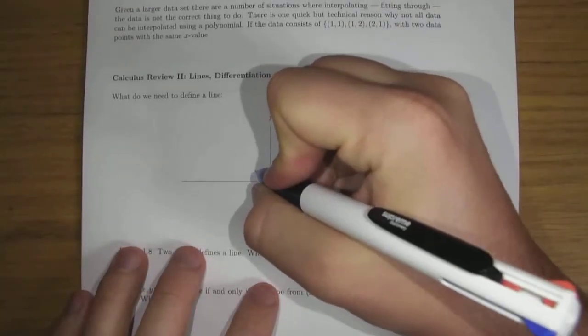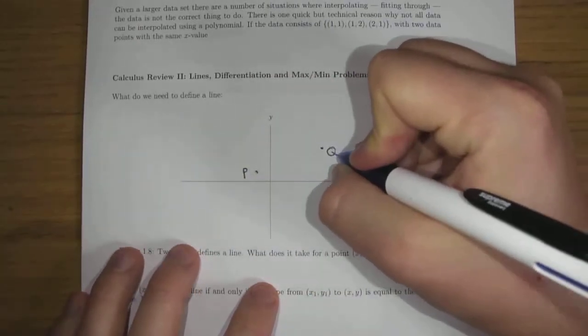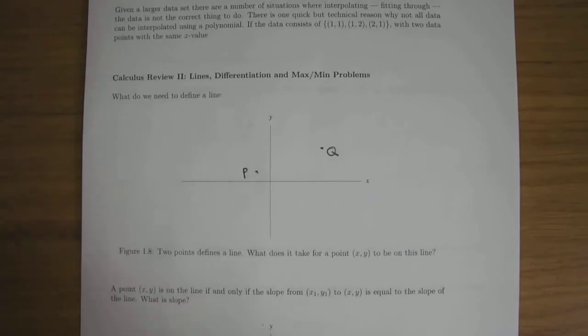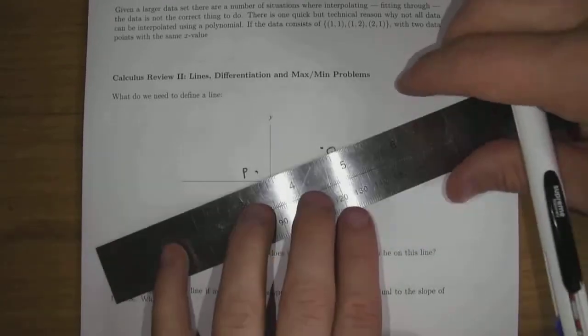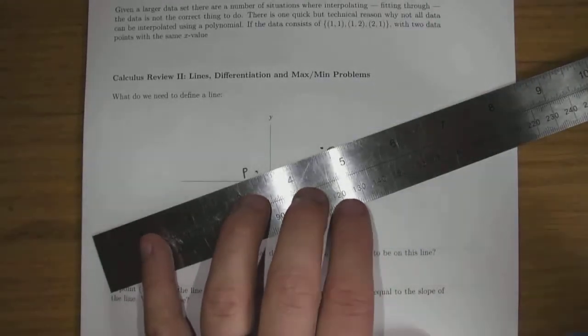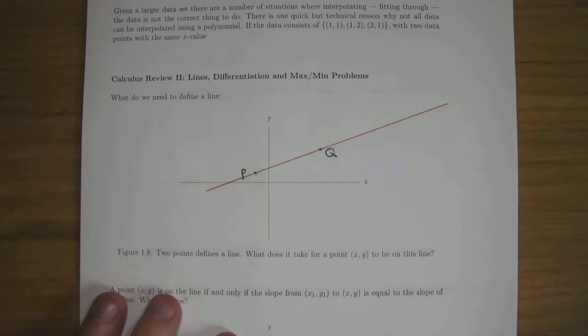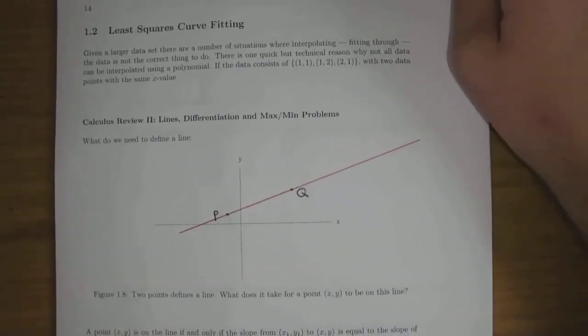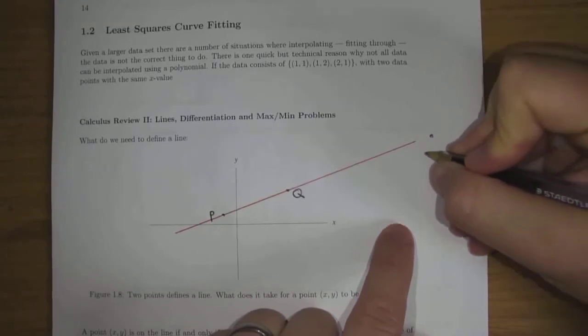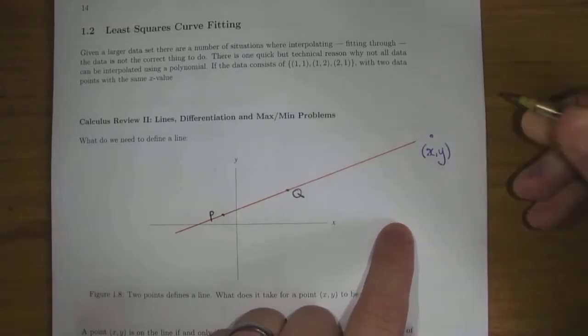So first question: what do you need to define a line? One way is to take two points. We could take the point P here and the point Q — it has to be a different point — and usually we won't be interested in a point vertically above another one. That uniquely defines a line. The question is: what does it take for some other point x, y to be on the line?